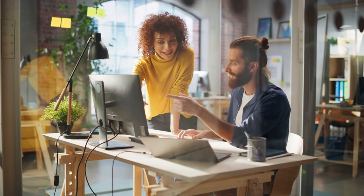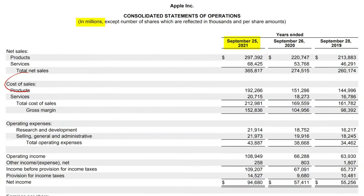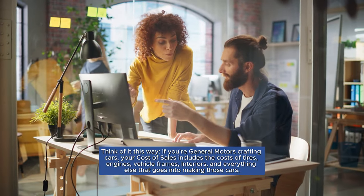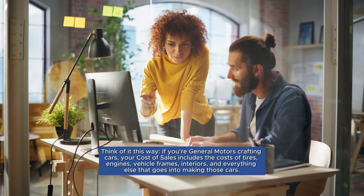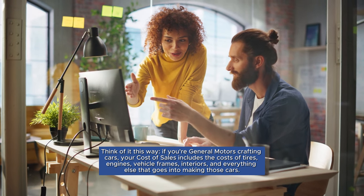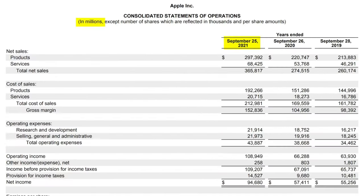Now let's proceed down the income statement to explore the cost of sales, often known as the cost of goods sold (COGS) — the expenses linked to producing the products or services a company sells. Think of it this way: if you're General Motors crafting cars, your cost of sales includes the costs of tires, engines, vehicle frames, interiors, and everything else that goes into making those cars. Apply the same concept to Apple: their cost of sales encompasses all the expenditures associated with manufacturing iPhones, iPads, Macs, and their wide range of products and services.